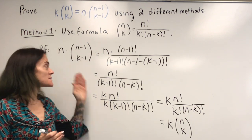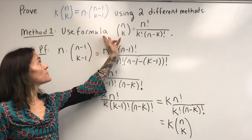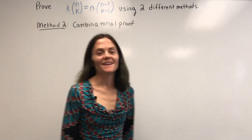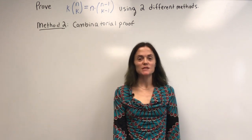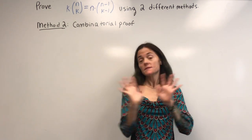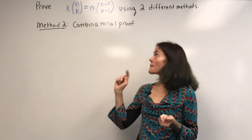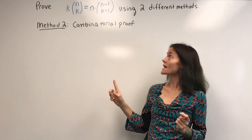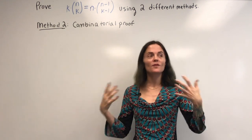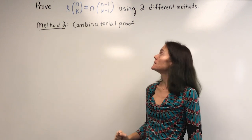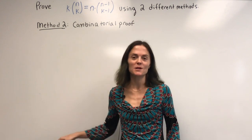So this is the first proof, and it used just what we know about factorials and the formula for n choose k. Now let's do a combinatorial proof of this identity. What this means is you must have some story that both the left-hand side and the right-hand side both count, and if they're both counting the number of ways to do the exact same task, then they must be equal.